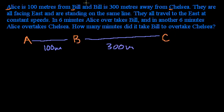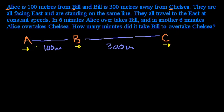The problem tells us they are all facing east and are standing on the same line. So let's say that's east — they're all facing in that direction, standing in the same line. They all travel to the east at constant speeds. So this could be the velocity of Alice (vA), velocity of Bill (vB), and the velocity of Chelsea (vC).